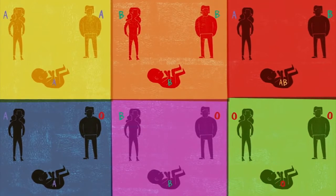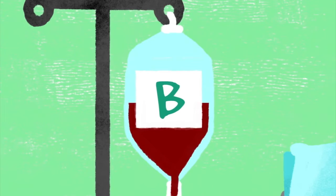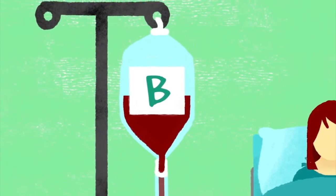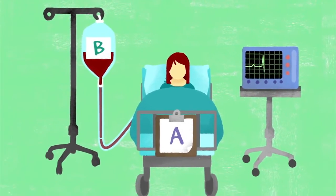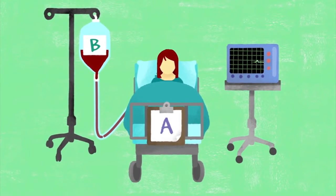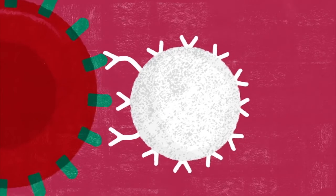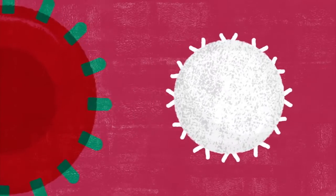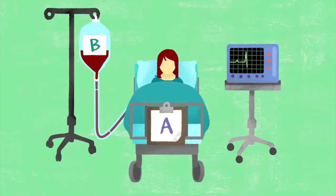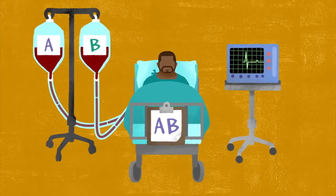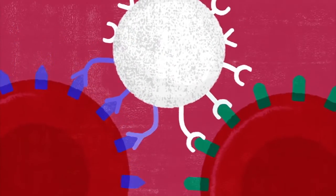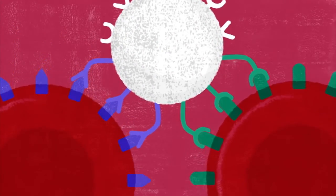Why do blood types matter? For blood transfusions, finding the correct one is a matter of life and death. If someone with type A blood is given type B blood, or vice versa, their antibodies will reject the foreign antigens and attack them, potentially causing the transfused blood to clot. But because people with type AB blood produce both A and B antigens, they don't make antibodies against them, so they will recognize either as safe, making them universal recipients.